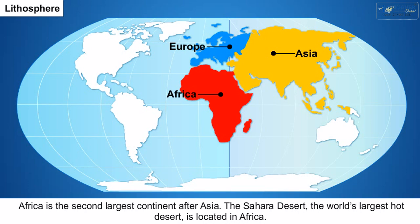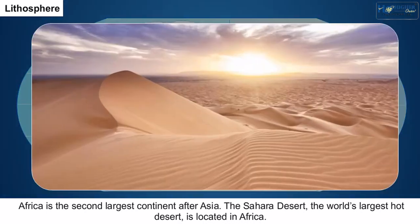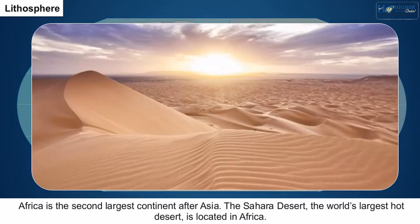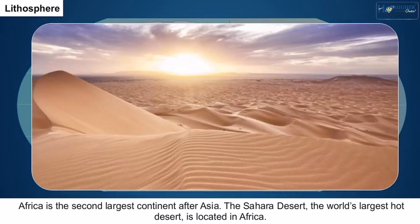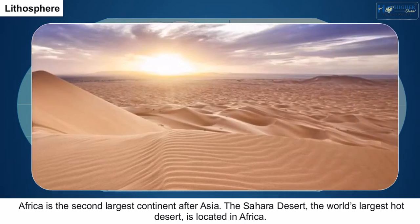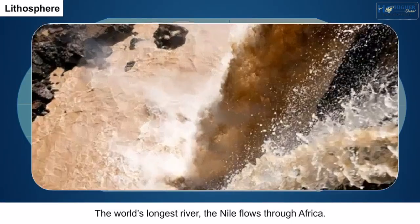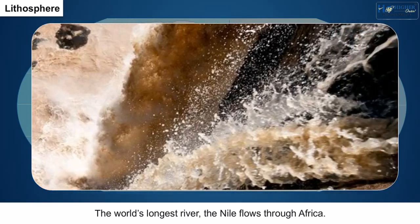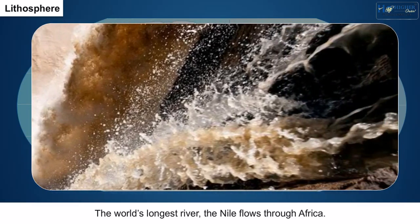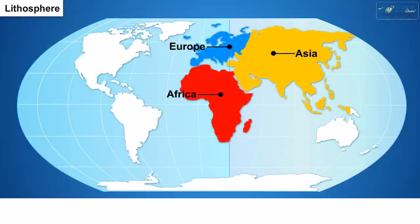3. Africa is the second largest continent after Asia. The Sahara Desert, the world's largest hot desert, is located in Africa. The world's longest river, the Nile, flows through Africa.